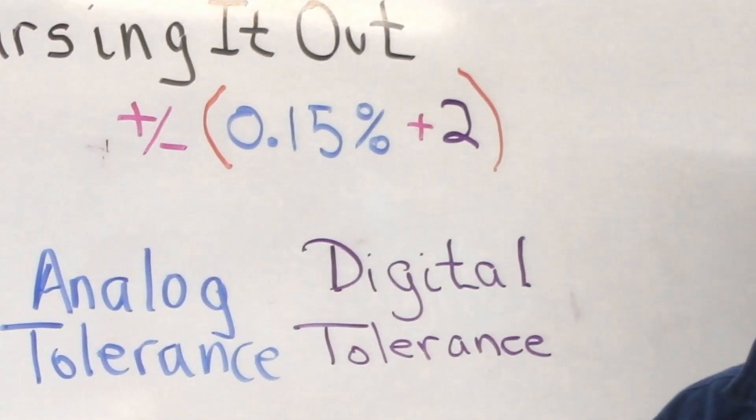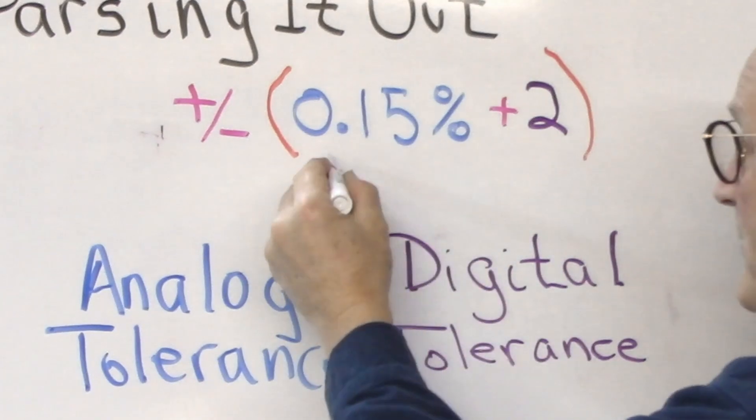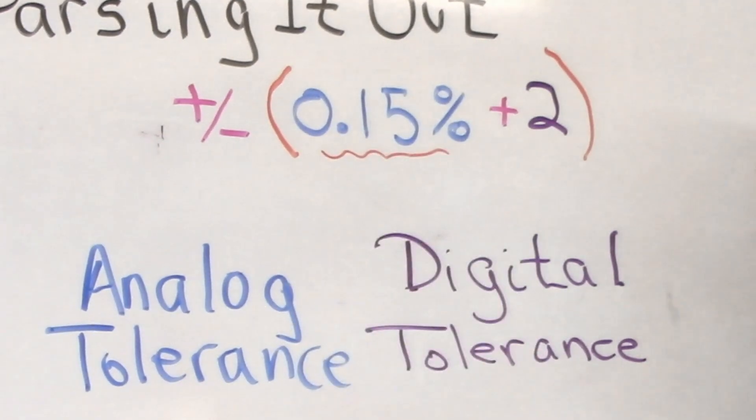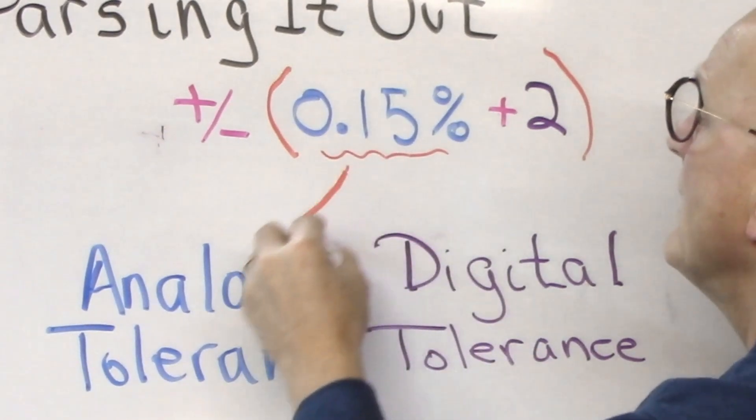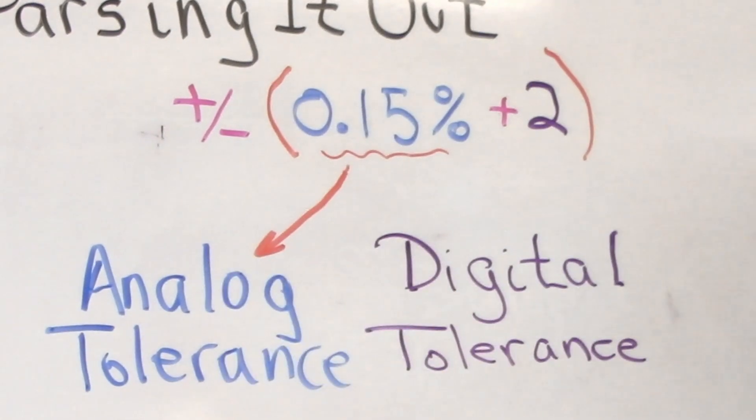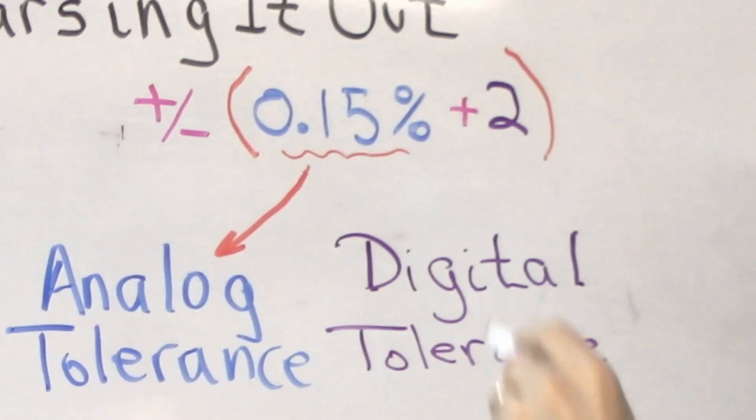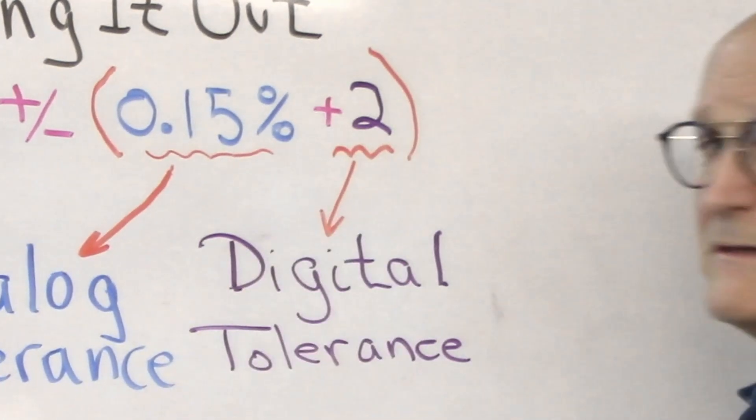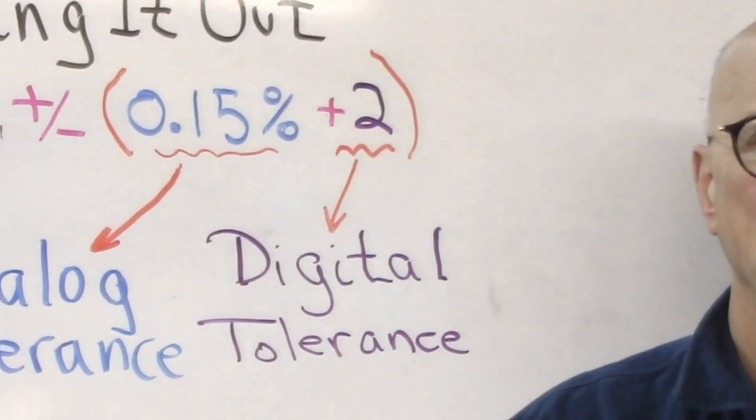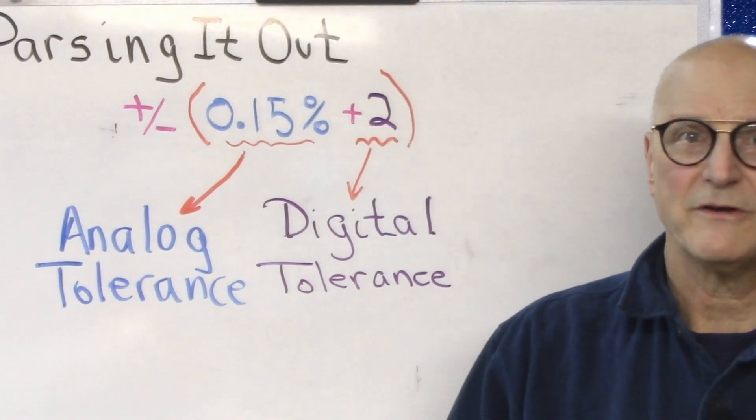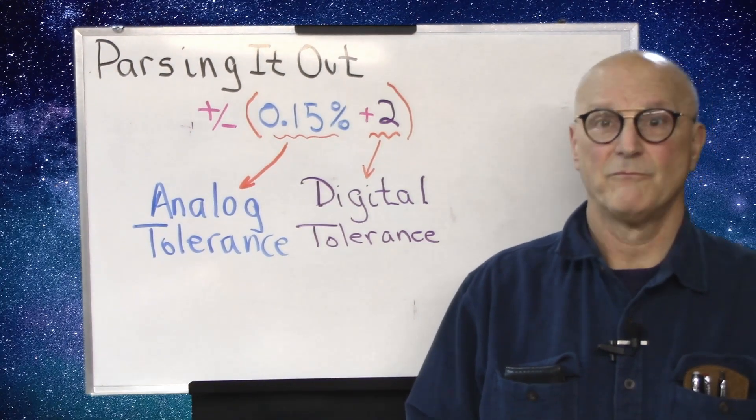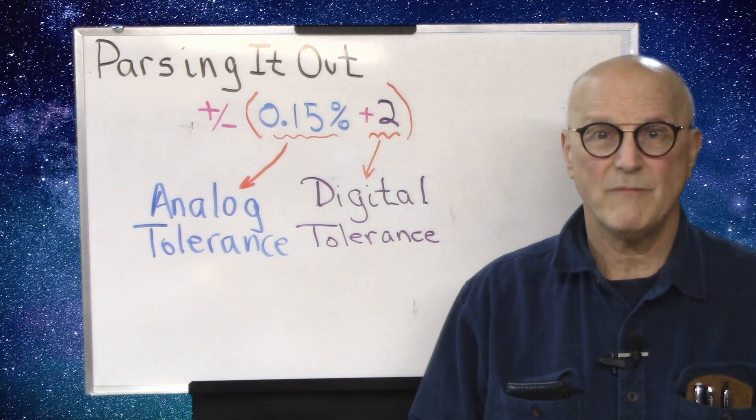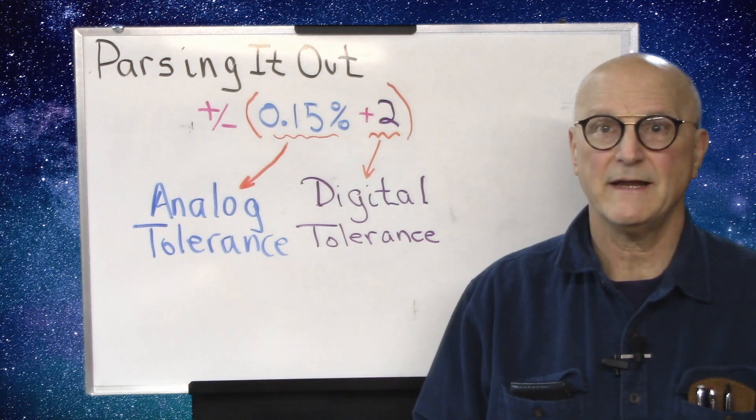But we're still not there yet. The percentage part on the left, this part right here, is the analog tolerance. And the part on the right, this added number here, is the digital tolerance. So let's go on to understand each of these and then bring them together into a measurement tolerance for a given measurement.